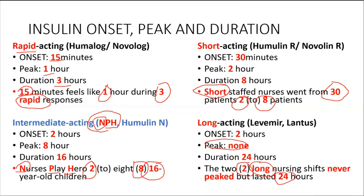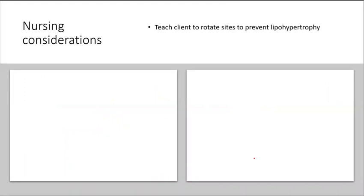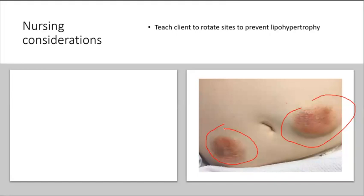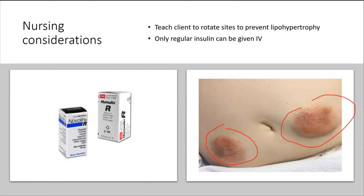Now let's look at nursing considerations with insulin. You want to teach your client to rotate injection sites to prevent lipohypertrophy — those fibro-fatty masses that develop at injection sites. Tell the client not to inject insulin into those masses. Also, remember that only regular insulin can be given IV.